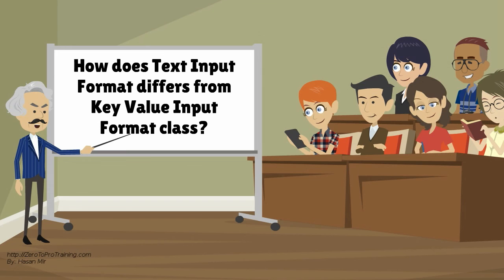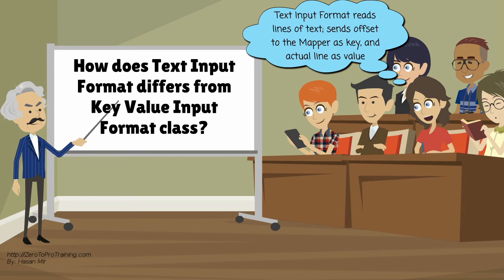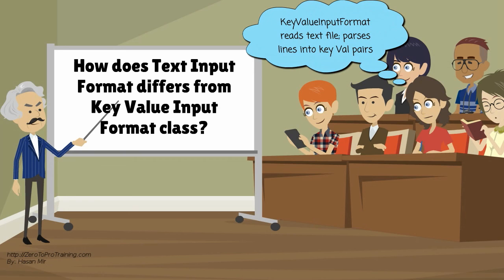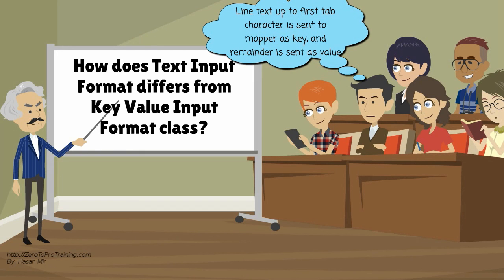How does TextInputFormat differ from KeyValueInputFormat class? TextInputFormat reads lines of text, and it sends the offset of the line to the mapper as key, and the actual line as value. KeyValueInputFormat reads a text file and parses lines into key-value pairs. Line text up to the first tab character is sent to the mapper as key, and the remainder is sent as the value.